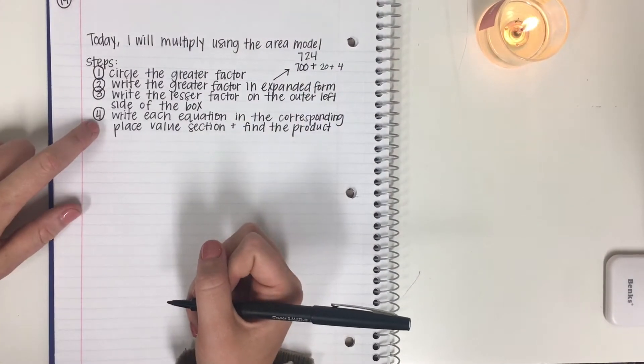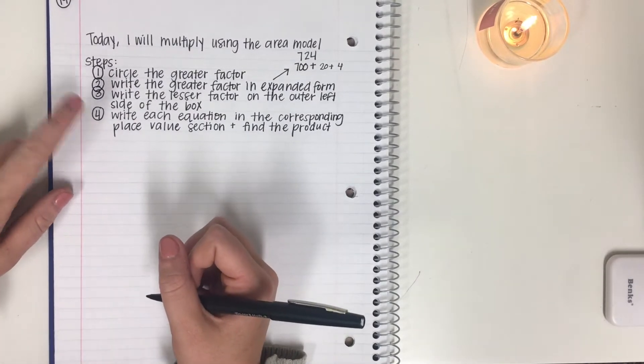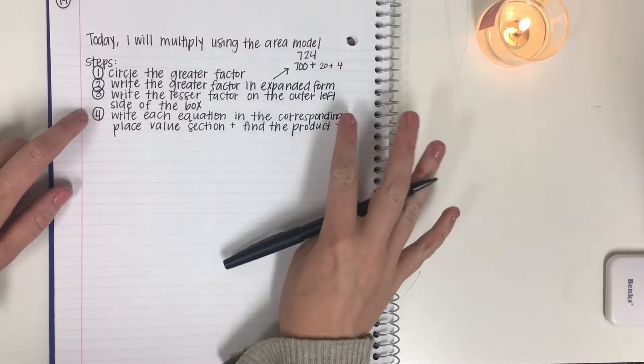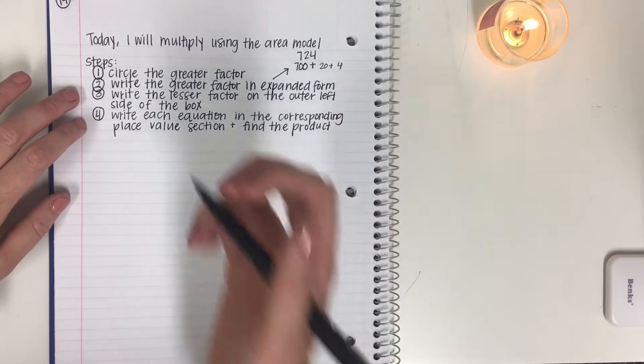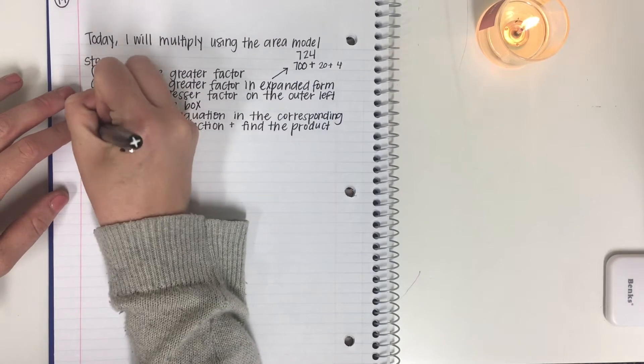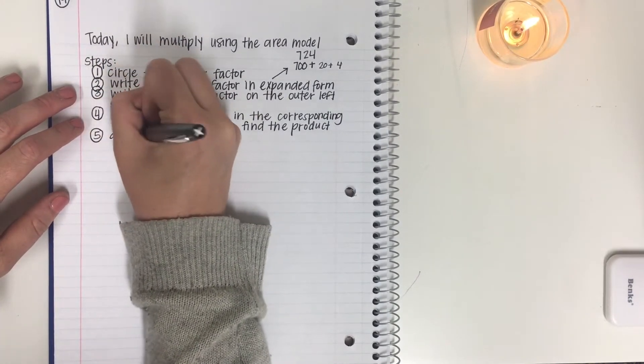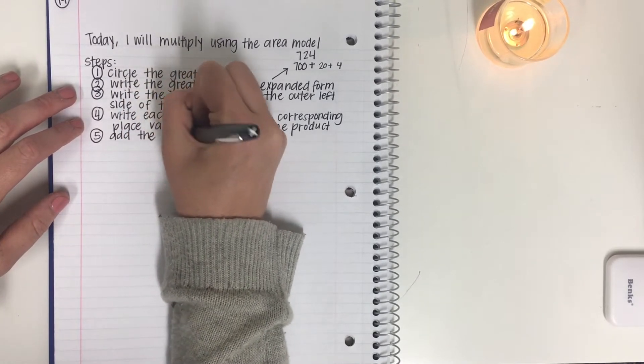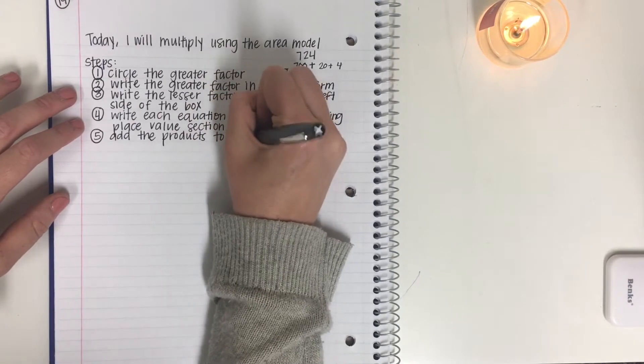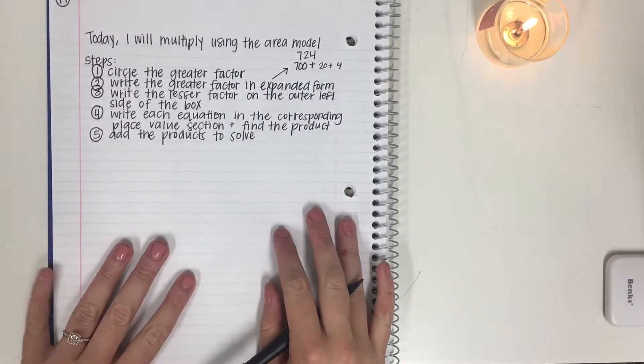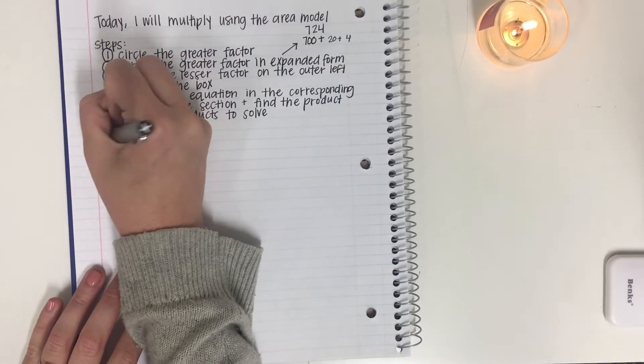Now step four might sound a little wordy, and I get it. It totally does sound kind of weird. We'll look at step four, and we'll see how this sentence turns into actual math. So don't fret on step four. And then step five, finally, is add the products to solve. Okay, let's take a look at one. Let's look at some examples.